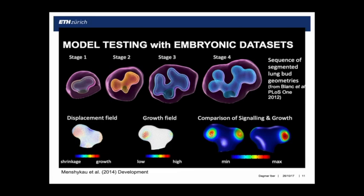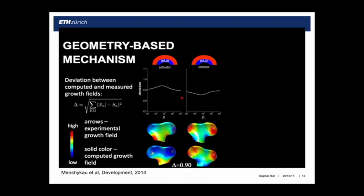A French group had published 3D shapes of a developing lung. We took those shapes and calculated displacement fields between them, inferred the growth fields, and solved our model and competing models on those shapes to predict the FGF10 signaling field. The main alternative was a geometry-based mechanism: if you already have curvature and express the ligand on the epithelium, diffusion away from the curved geometry introduces a pattern. We solved those models — you only have one parameter, the effective diffusion constant. For the inhibitor model, signaling and growth fields are close but not perfectly overlaying. If you do it quantitatively, you can completely reject such a mechanism.